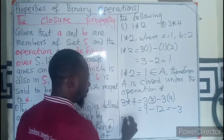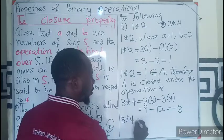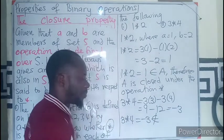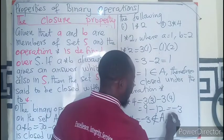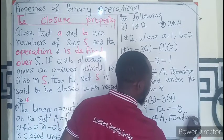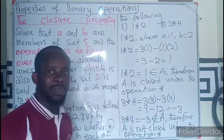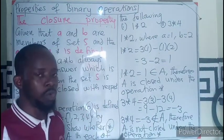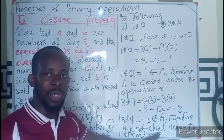So 3 star 4, being equal to minus 3, is not a member of set A. Therefore, we can say that the set A is not closed under the operation,